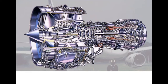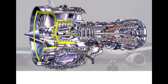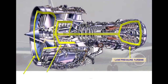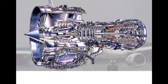The low-pressure compressor, also called N1, consists of a front fan and a low-pressure compressor, connected to a low-pressure turbine. The high-pressure compressor, also called N2, consists of a high-pressure compressor connected to a high-pressure turbine.